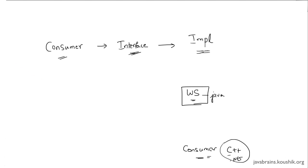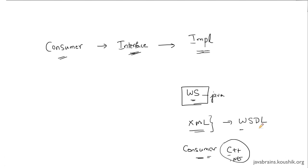When the creators of the web service specification thought about this problem, what they came up with was a format that would be understood by all technologies and all consumers. It's actually XML. When you create a web service and you want to share the contract, you actually share that contract as an XML document. This XML document is called WSDL, pronounced as WSDL. It stands for Web Service Description Language or Web Service Definition Language. The WSDL document contains the contract to your web service, and you share it with consumers.